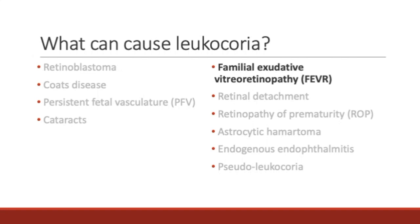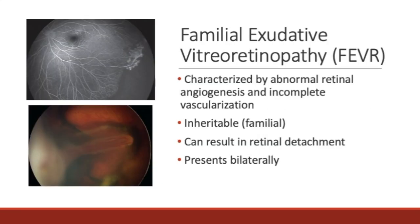Familial exudative vitreoretinopathy is an inherited disease characterized by incomplete vascularization of the peripheral retina, resulting in retinal ischemia. This leads to abnormal retinal angiogenesis and results in traction, exudation, and retinal detachment. The top photo shows an avascular peripheral retina on fluorescein angiography, and the bottom photo shows retinal detachment due to traction.